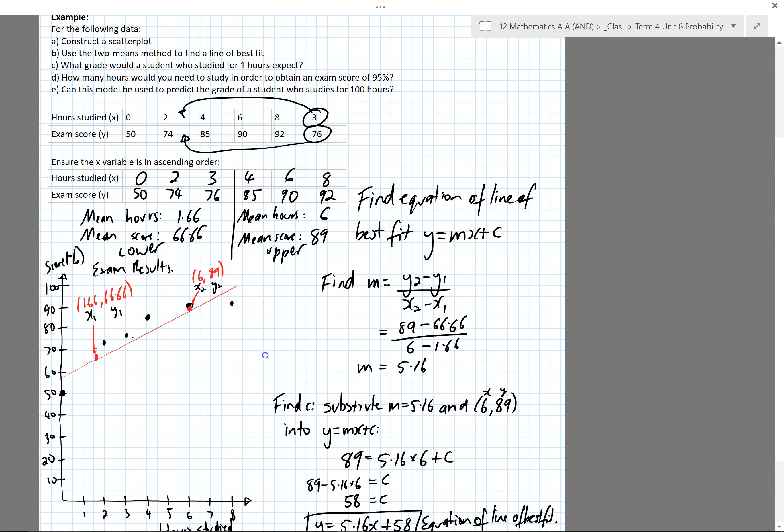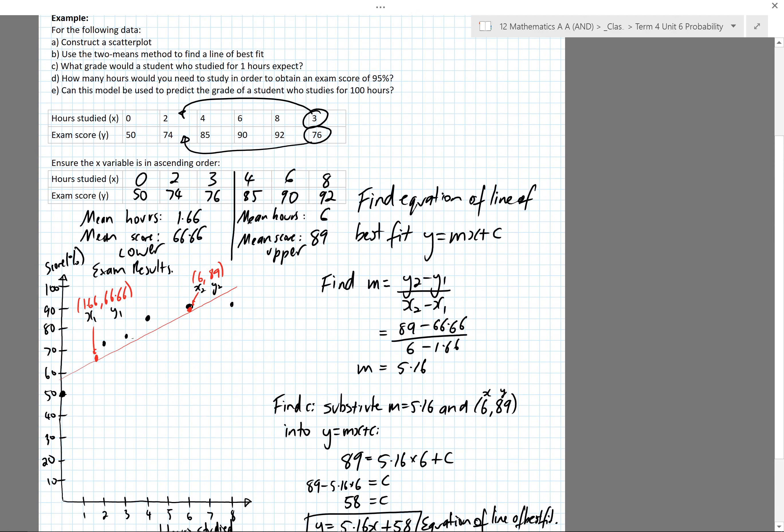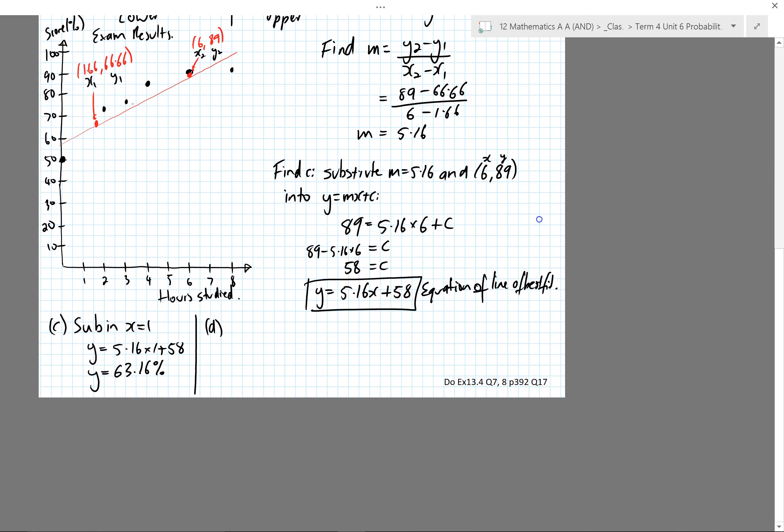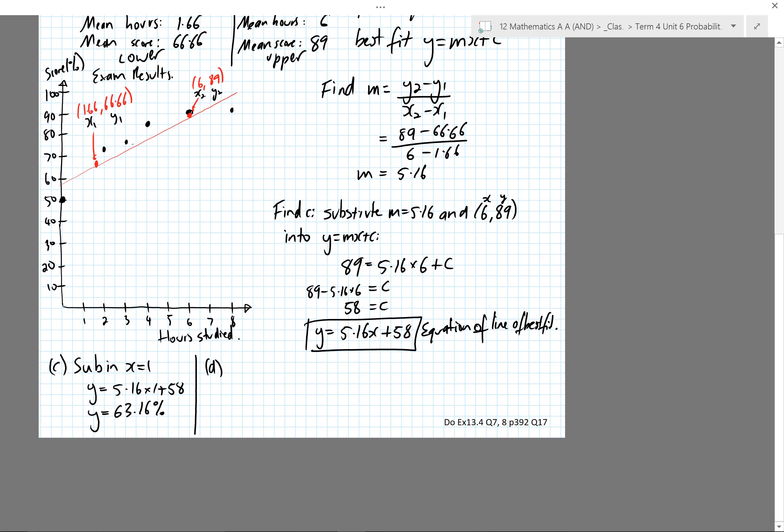For part d, how many hours would you need to study to obtain an exam score of 95%? Our exam score is our y value, so I would sub in y equals 95. 95 equals 5.16x plus 58. You should be able to solve that on your own and get 7.17 hours.